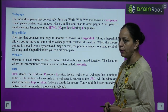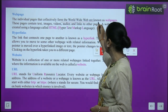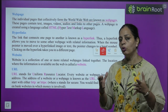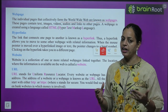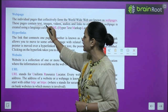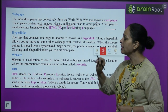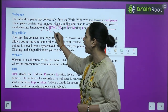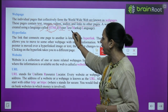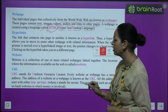Web page: the individual pages that collectively form the World Wide Web are known as web pages. Just like a book has pages, the World Wide Web has web pages, each containing information. These pages contain text, images, videos, audios, and links to other pages. A web page is created using a language called HTML — Hyper Text Markup Language.